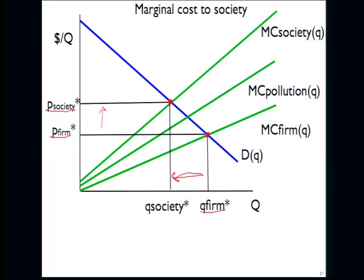Taking in this external cost should be higher. We should be consuming less at a higher price, which should be familiar in the general case about bringing environmental externalities in.